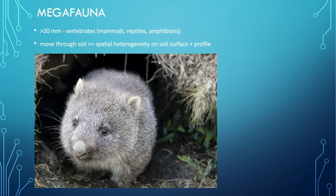The megafauna — over 20 millimetres in size — includes creatures like wombats that make burrows, and bandicoots that dig holes. Even organisms that don't fully move through the soil create spatial heterogeneity on the soil surface and in the profile. When they dig, they're moving microbes around, creating water infiltration into the holes, and adding an extra level of complexity to the ecosystem.